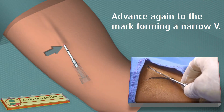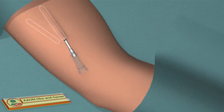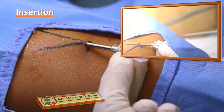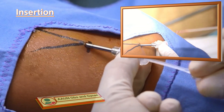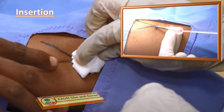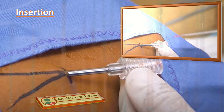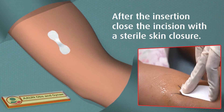Advance the trocar again to the mark, forming a narrow V shape — as you can see in this video. Remove the plunger and load the second implant. Insert the second implant next to the first one to form a V shape. Fix the position of the first implant with the left forefinger and advance the trocar along the side of the finger to ensure a suitable distance between the two implants and prevent expulsion. Leave a distance of about 5 mm between the incision and the end of the implant, and check correct position by careful palpation.